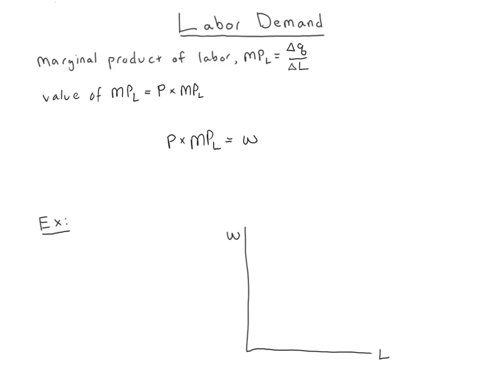This equation implicitly gives us our labor demand. If we have a price and a marginal product of labor function and a wage, we can solve this equation for L and find the amount of labor that the firm wants to hire. It doesn't look like it's an equation about L — in fact, you don't really see the L anywhere except in the subscript — but that was true with MC equals MR.